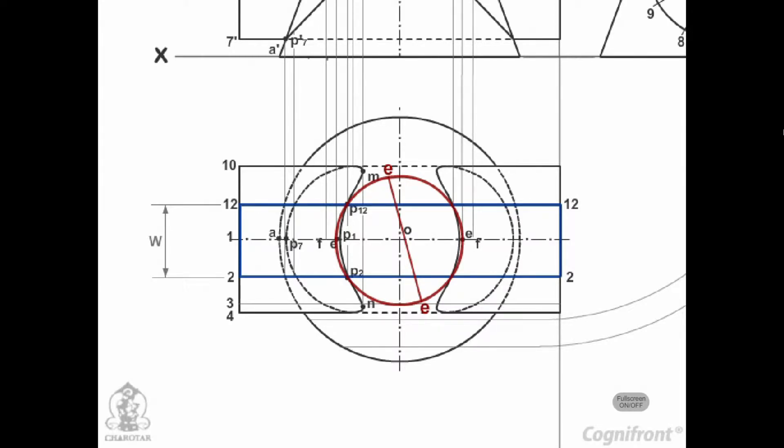These two sections intersect at points P2 and P12. These sections are clearly indicated in the top view by the rectangle 2, 2, 12, 12 and the circle of diameter EE.